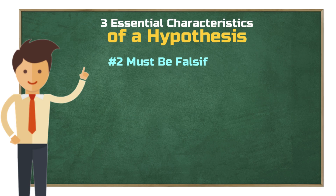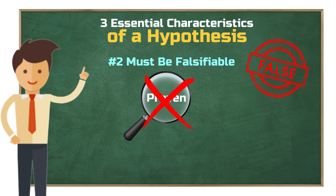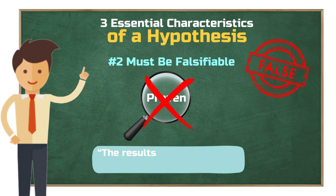Second, a hypothesis must be falsifiable. Your research must allow for the possibility that your hypothesis could be proven false. If you create a hypothesis that logically cannot be refuted, then the hypothesis serves no real purpose. You should also be mindful of your wording. In scientific writing, nothing is ever definitively proven. Even if all your findings support a given hypothesis, they only serve as evidence. Therefore, in your academic paper, you should state something like 'the results indicate that the relationship may be valid,' rather than outright claiming proof.